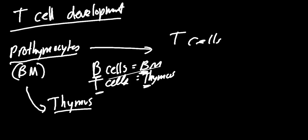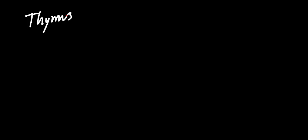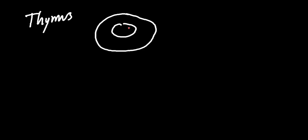Once in the thymus, we've got these prothymocytes. The thymus has a cortex — the outer layer — and a medulla — the inner layer. You see that pattern in the adrenal glands and kidneys too. Our prothymocyte travels to the thymus, becomes a T cell precursor, and starts in the cortex, working its way to the medulla.